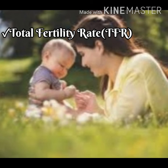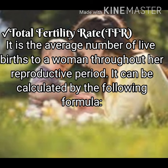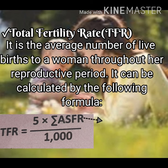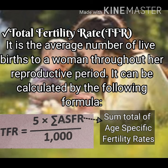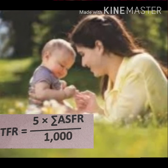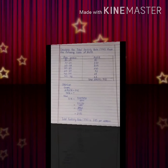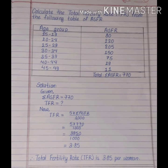The Total Fertility Rate (TFR) is the average number of live births to a woman throughout her reproductive period. It can be calculated by multiplying the sum total of the Age-Specific Fertility Rates by 5 and dividing by thousand. Here is one example of the calculation of Total Fertility Rate.